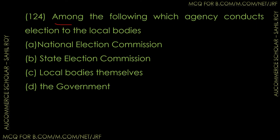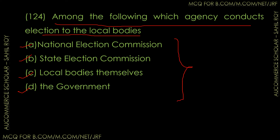Question number 123: Among the following, which agency conducts elections to the local bodies? Options: National Election Commission, State Election Commission, local bodies themselves, or government bodies. The correct answer is Option B — State Election Commission. The State Election Commission conducts elections to the local bodies.